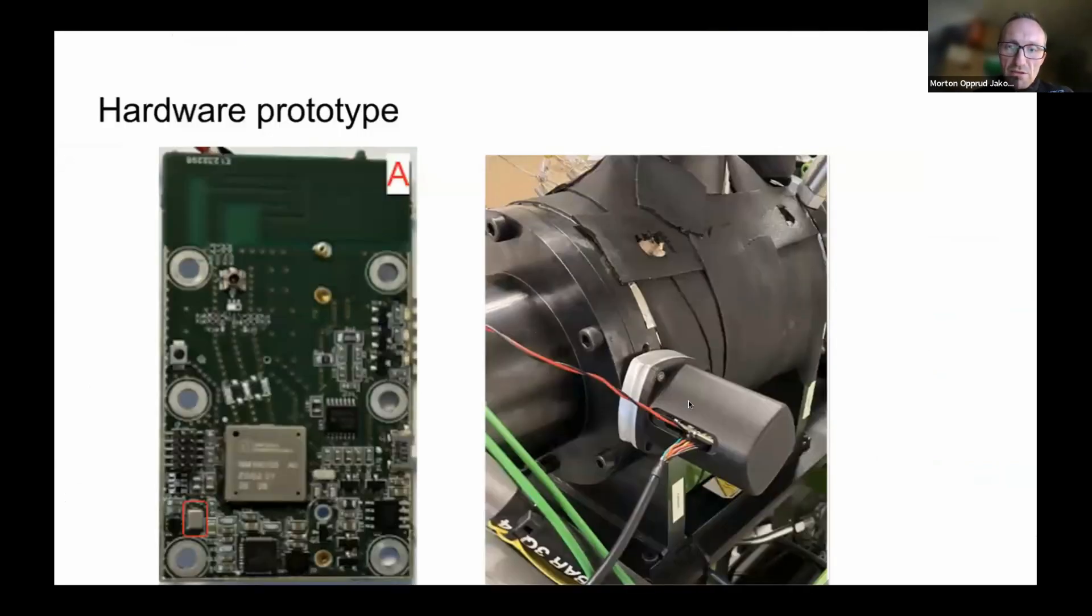And the prototype sensor is shown here to the right, mounted on the test rig and with a serial cable for capturing raw data. And on the left, you have the PCB with a Cortex-M4 microcontroller and a bunch of sensors. The red circle shows the microphone placement in this case. That's what's been used to capture the data and do the analysis and the experiments.